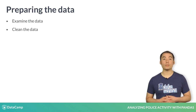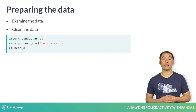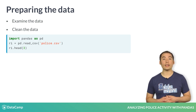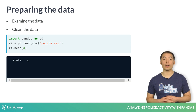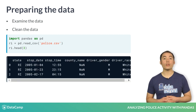As always, we'll start by importing pandas as PD. We'll use the read_csv function to read in the data set from a file, and then store it in a data frame called RI, which stands for Rhode Island. We'll use the head method in order to take a quick glance at the data frame, though there are many more columns than can fit on this screen.